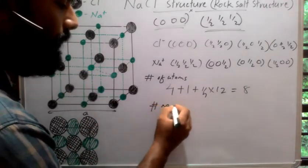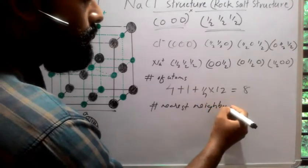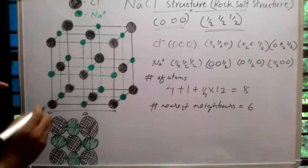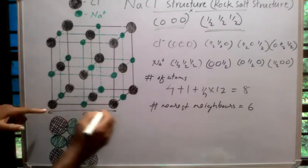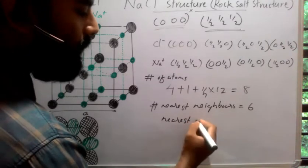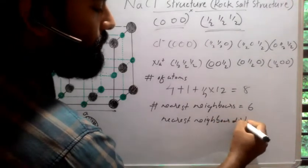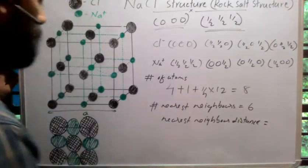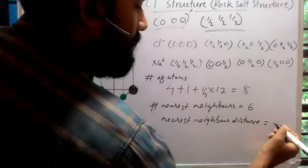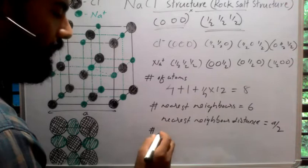The number of nearest neighbors is equal to six. The nearest neighbor distance: since this is the lattice parameter 'a', the nearest neighbor distance is half of that lattice parameter, equal to a/2.